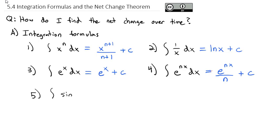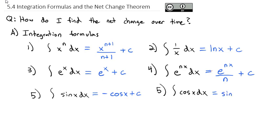What about the integral of sine x dx? We think about our differentiation rules — the derivative of what equals sine? The derivative of cosine equals negative sine. So to account for that negative, the integral of sine is negative cosine of x plus a constant. Similarly, the integral of cosine of x dx: we know the derivative of sine is cosine, so the integral of cosine must be the sine of x plus a constant. Those formulas you should get really familiar and comfortable with.